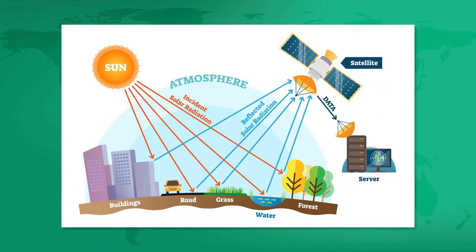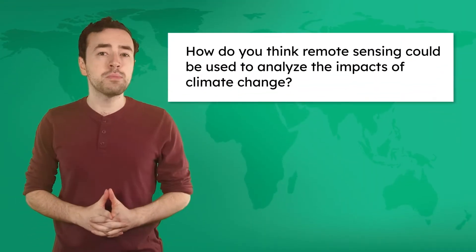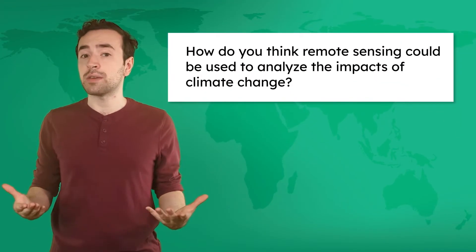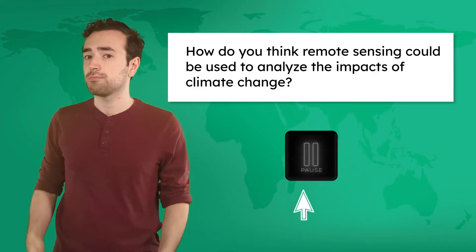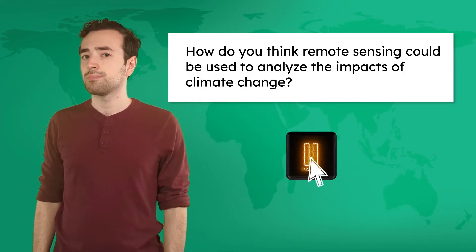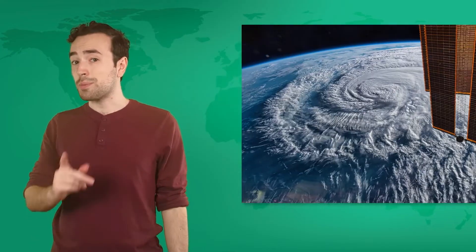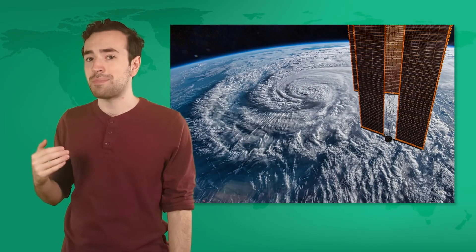More complex sensors can detect energy like radiation, light and heat that reflects off of different objects on Earth, like forests, oceans, or cities. The data is then turned into images that geographers use to study all kinds of global issues. How do you think remote sensing could be used to analyze the impacts of climate change? With remote sensing, geographers can monitor impacts like extreme weather events or rising sea levels without having to be on the ground.